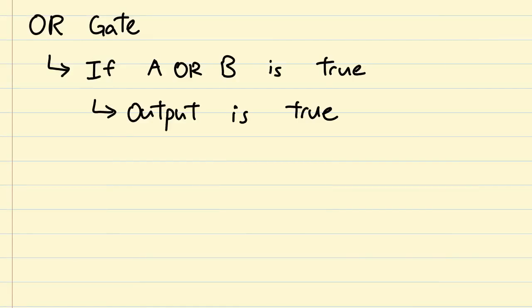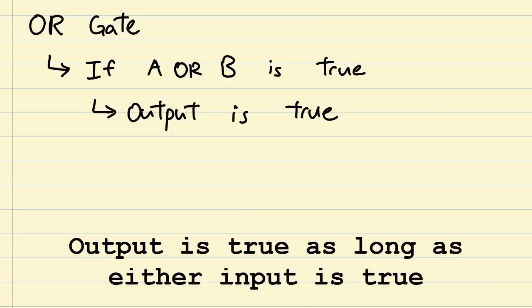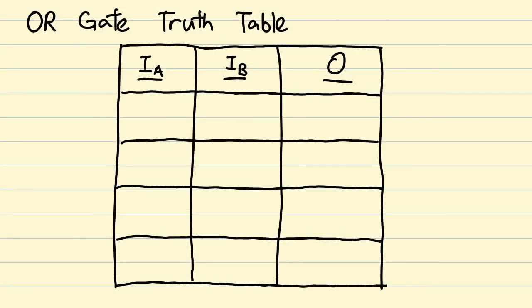Let's jump back to logic gates. Here's the OR gate. Here's how you remember how this gate works. The output is true if input A OR input B is true. What this means is that either one of the inputs must be true for the output to be true. Using this rule, let us construct the truth table for the OR gate.